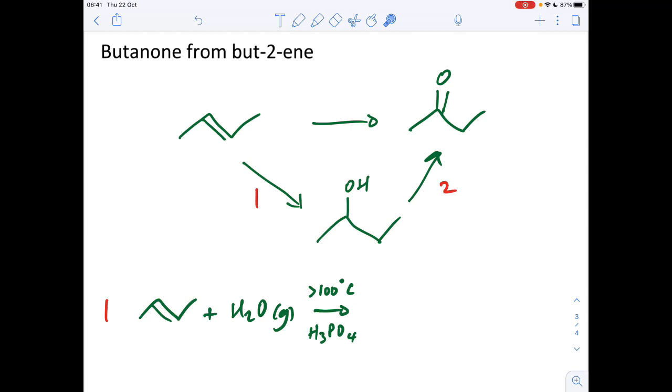So basically what's going to happen, the water's going to add across the double bond. So let's say the OH group's going to go there. The H goes there. It could add the other way around. But in the case of but-2-ene, it would still generate the alcohol that we want, butan-2-ol. So that's going to generate one product, addition reaction, butan-2-ol.